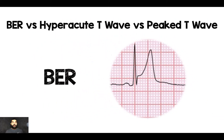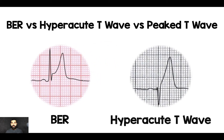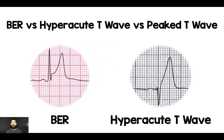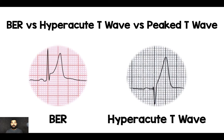Let me zoom in and compare three types of T waves. Benign early repol has a slow upslope and then a precipitous drop at the end — that's more likely to be benign early repolarization. Hyperacute T waves are symmetric on both sides — broad-based like benign early repol, but symmetric going up and coming down, and usually much taller than the QRS. In fact, the QRS usually fits underneath that T wave.